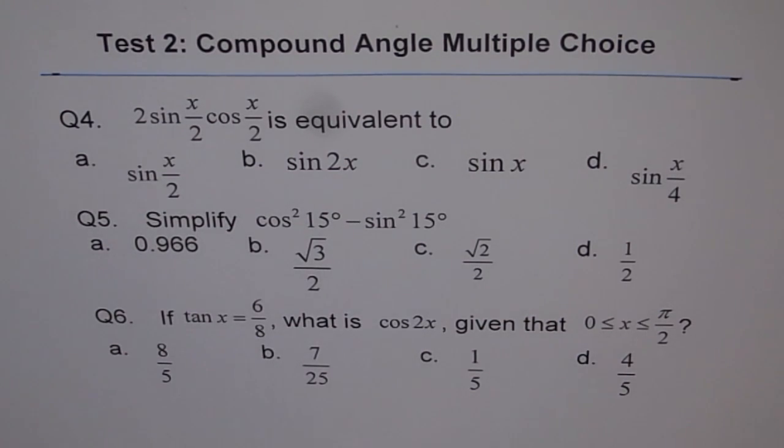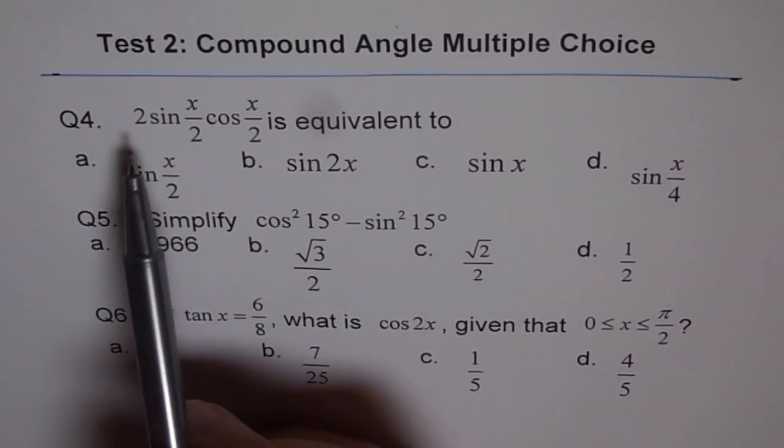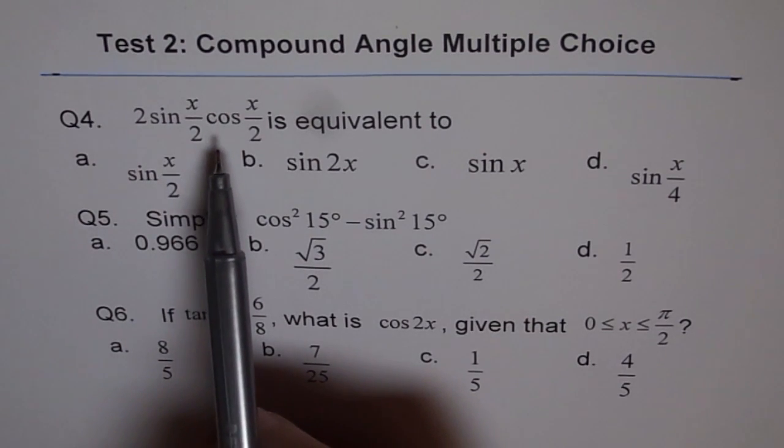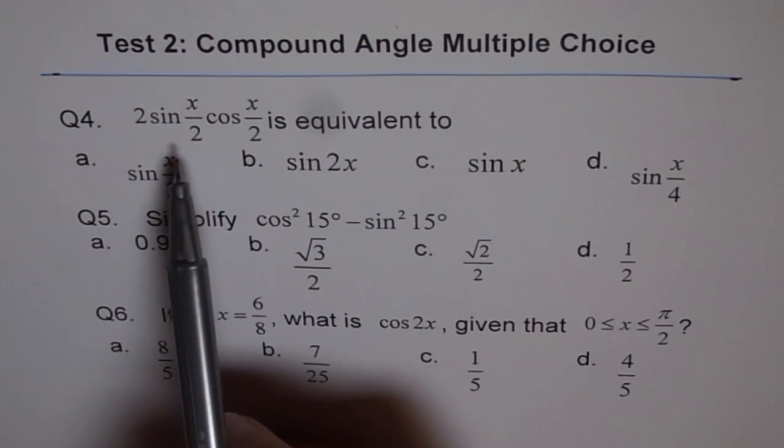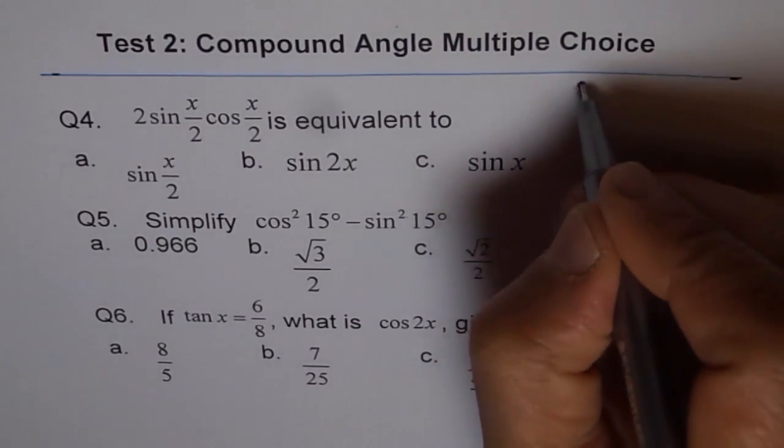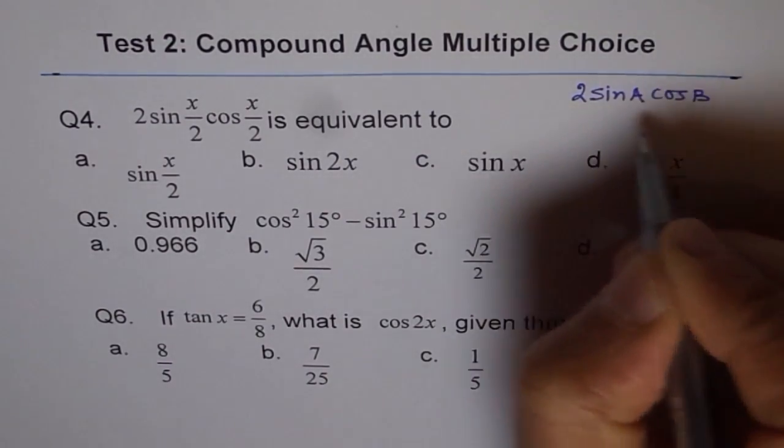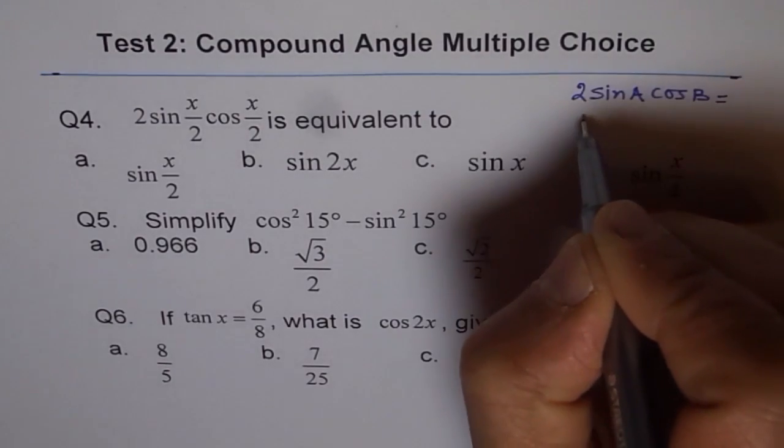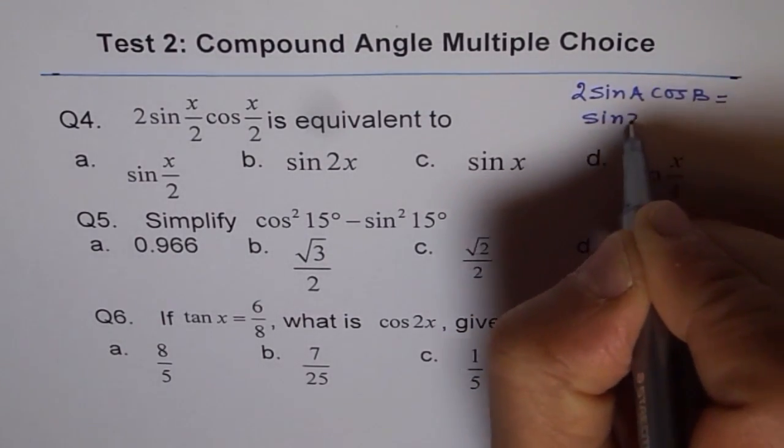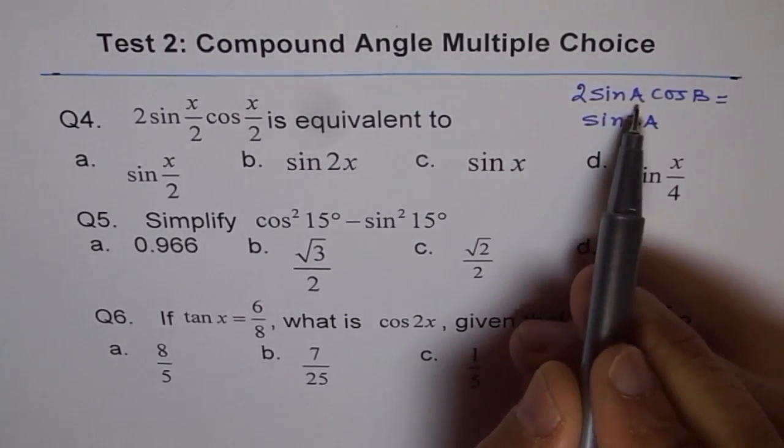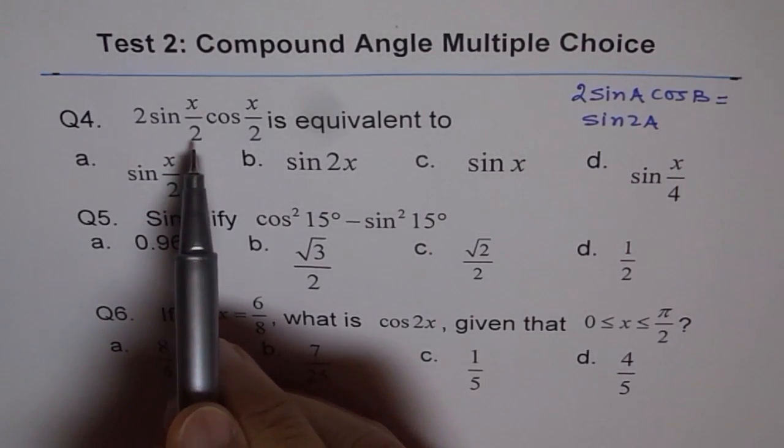Here is my solution. Question 4: 2sin(a)cos(b) - what is the formula? Think like this: 2sin(a)cos(b) equals sin(2a). So this is sin(2) times a, twice the angle given. Here the angle given is x/2.